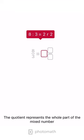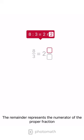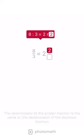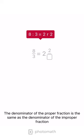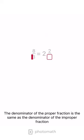The quotient represents the whole part of the mixed number. The remainder represents the numerator of the proper fraction. The denominator of the proper fraction is the same as the denominator of the improper fraction.